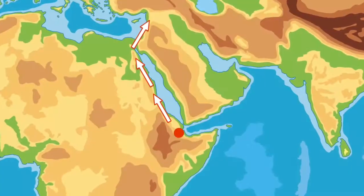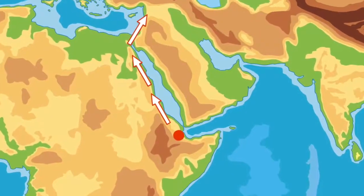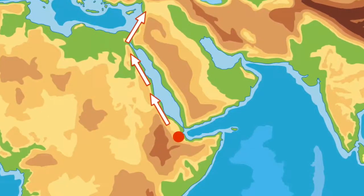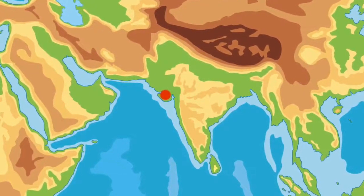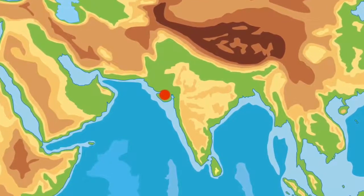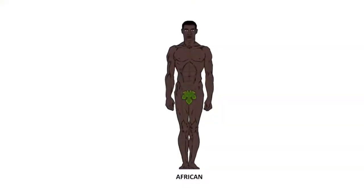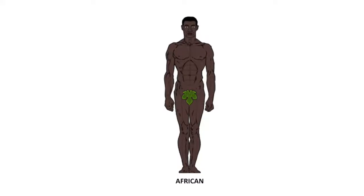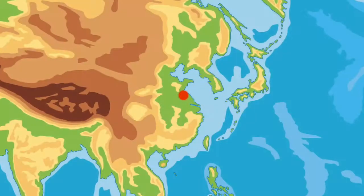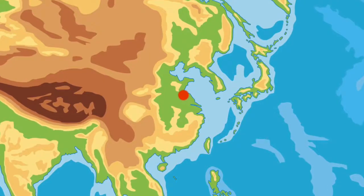Another wave of these humans migrated east from their homeland in the northeast of Africa. After decades of traveling along the coastline they reached the territory we know today as India. Most of these Africans stayed in India; however, a few of the tribal groups decided to keep moving. They advanced further east and found an area to stay in Far East Asia.